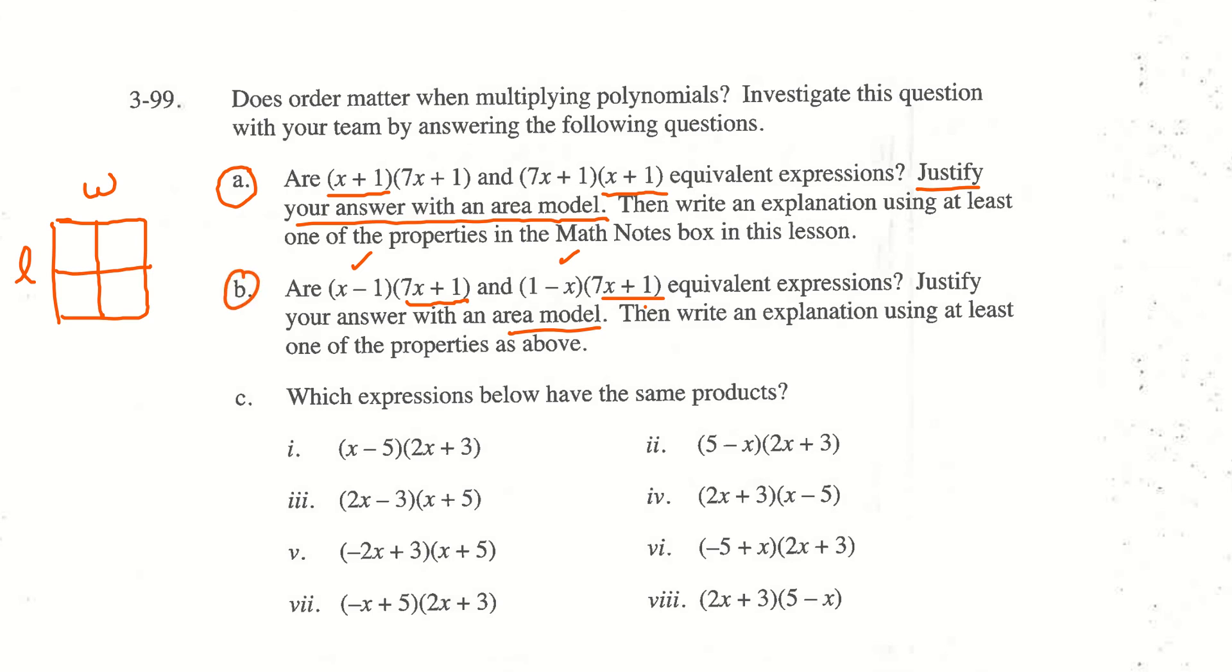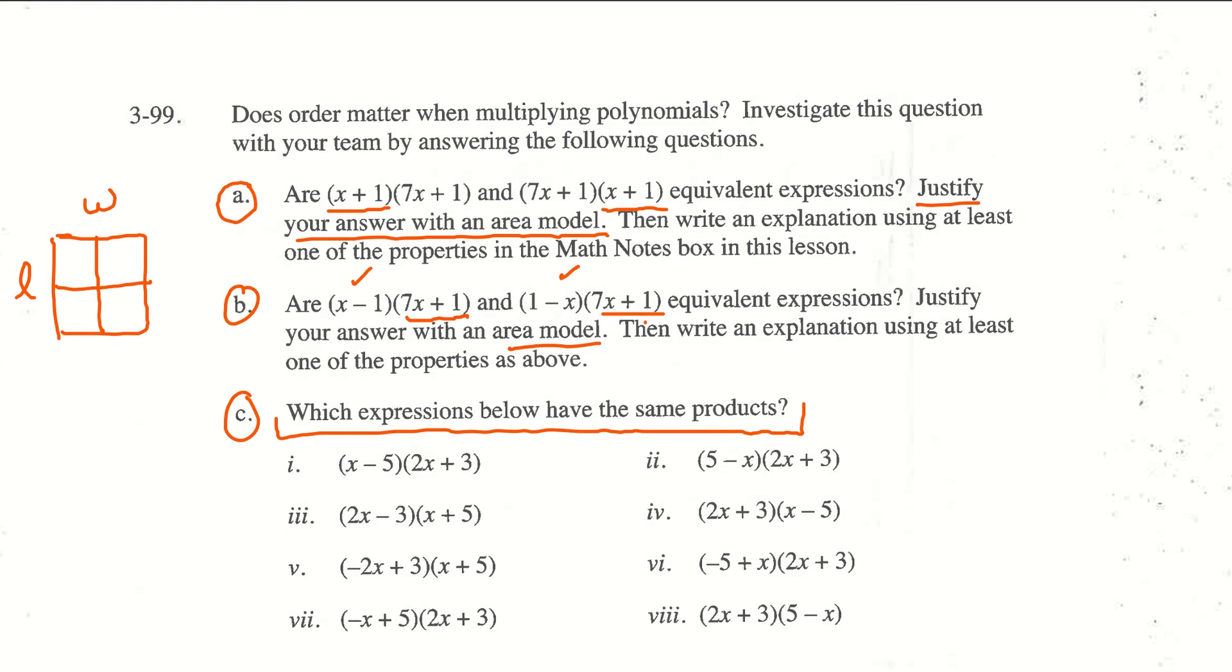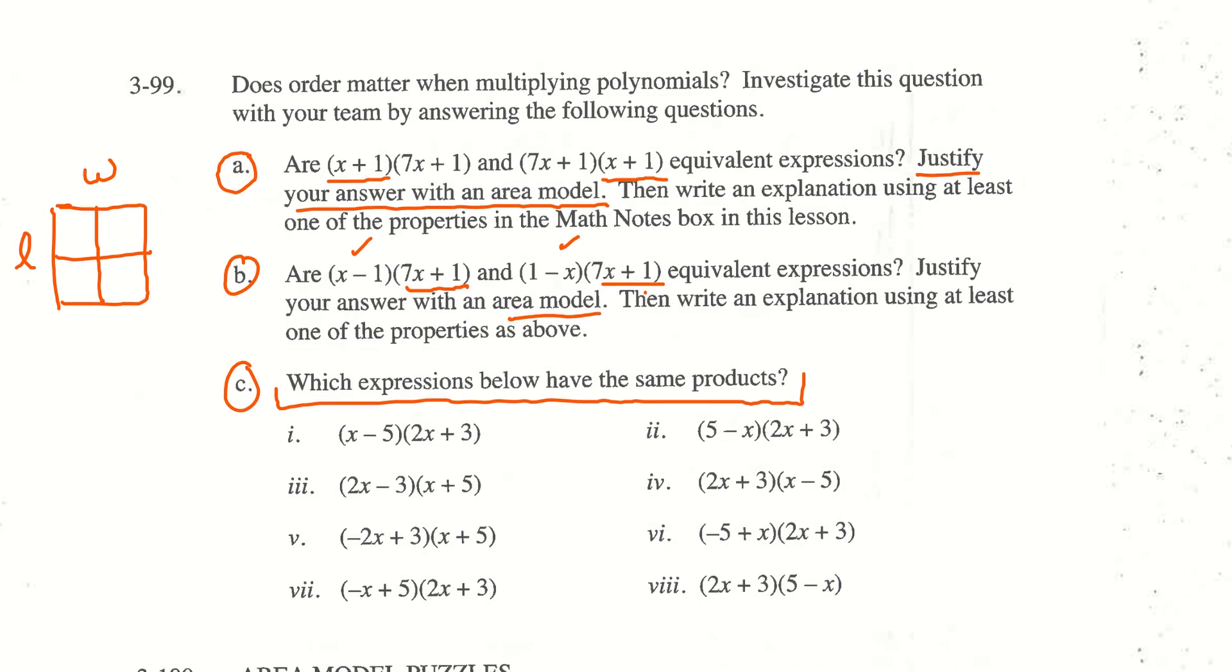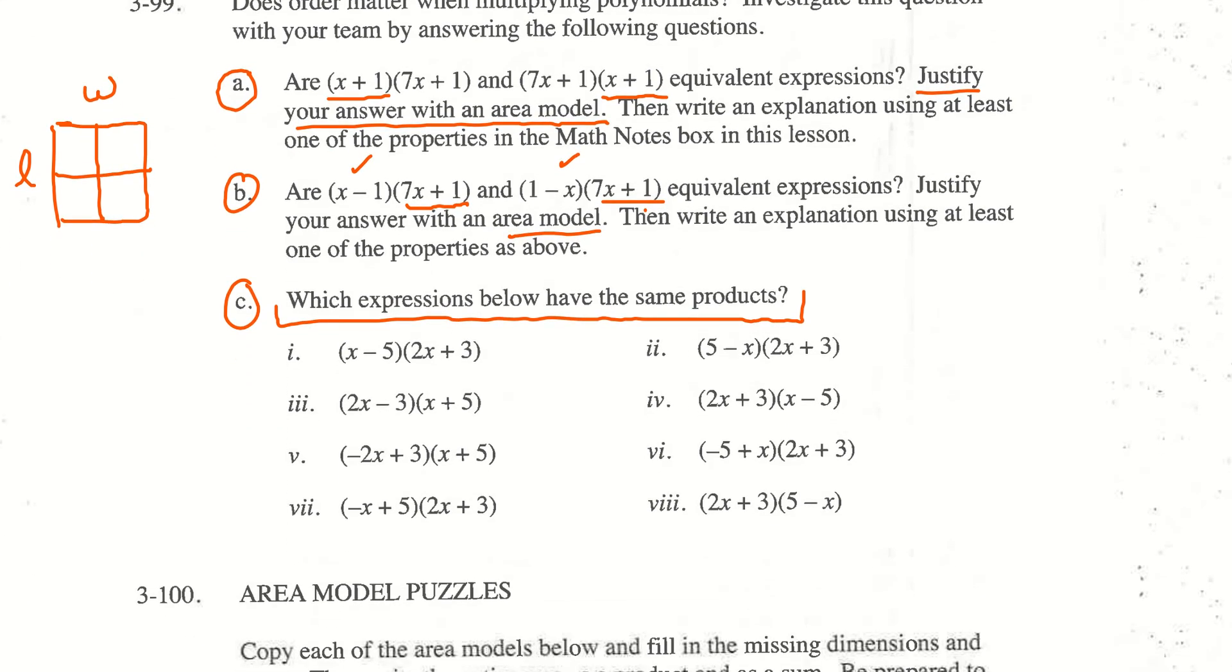In c, it says which expressions below have the same products. If you did what you should have done in a and b, there should be shortcuts that you'll notice, ways that you can identify which ones of these are the same. So look at them closely. You might want to spin up a quick call with your classmates and discuss which ones of these are the same. But just tell me which expressions below have the same products when you multiply them out.